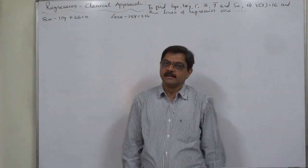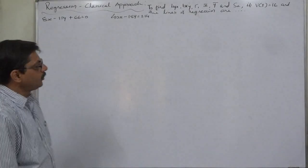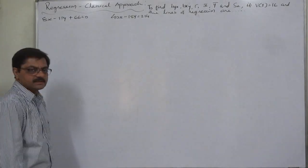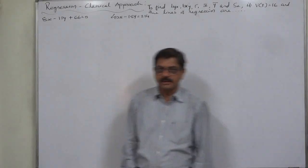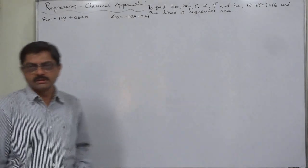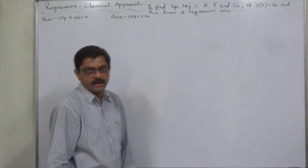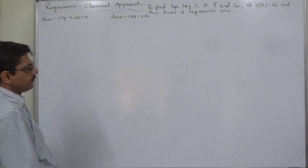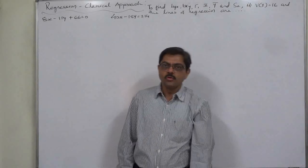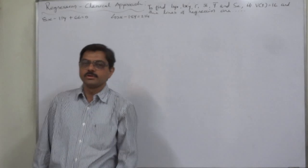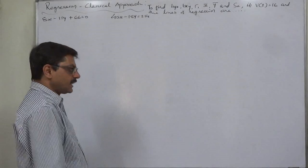Hello and Namaskar! In this session on Linear Regression — Classical Approach, we are going to discuss a case where the information available is only two equations and sometimes any one of the variances or standard deviations. From this much information, we need to find out almost everything: the two coefficients of regression, the coefficient of correlation, the two means, and the missing standard deviation or variance. Let us start.